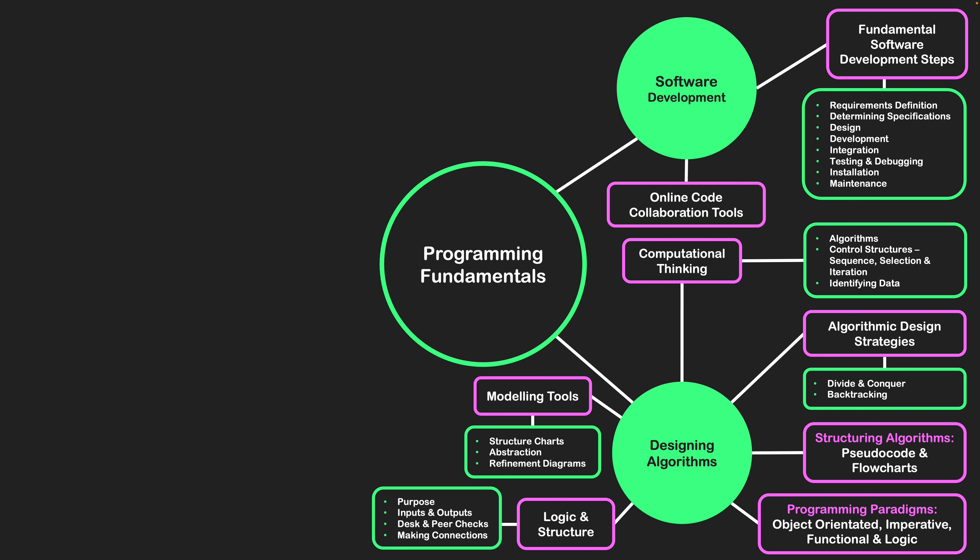We also have modeling tools — ways of diagrammatically representing what our actual program could look like. The first is structure charts, showing an overall system and how modules are connected to one another. We have abstraction for adapting and using ideas that are already in existence, and then refinement diagrams for ensuring we're on the right track and trying to simplify and finalize the design process.